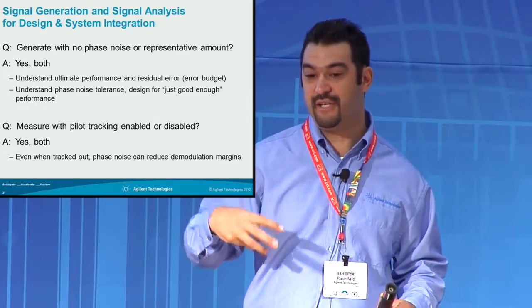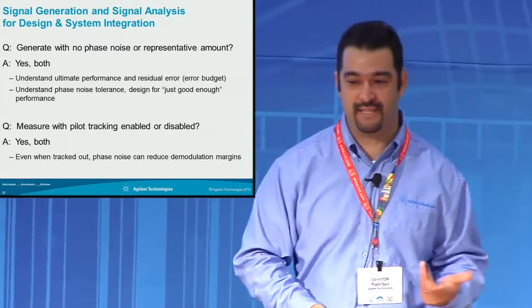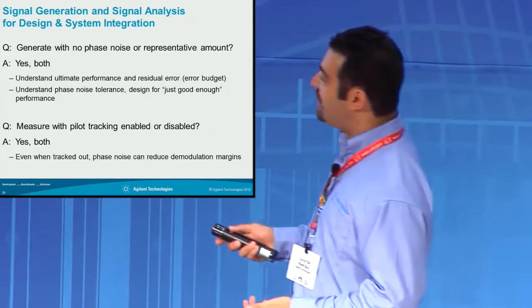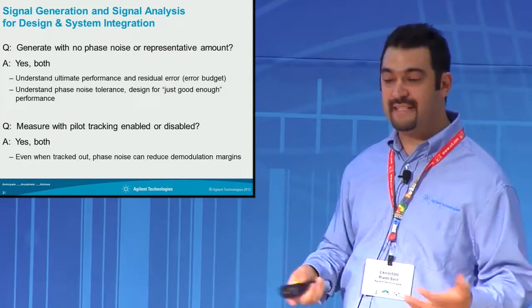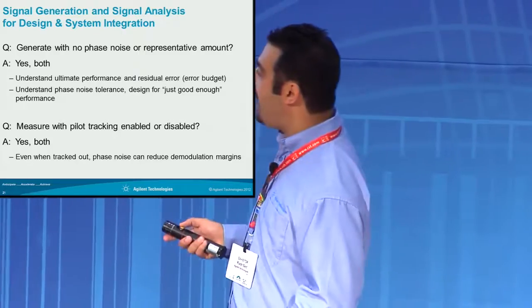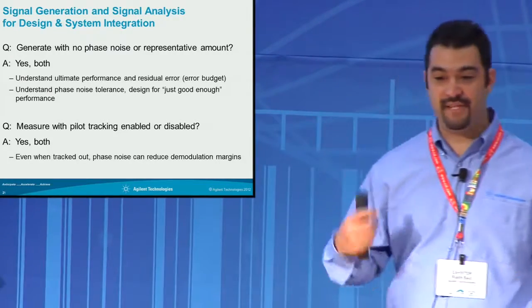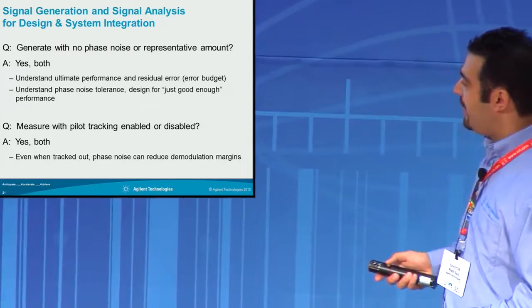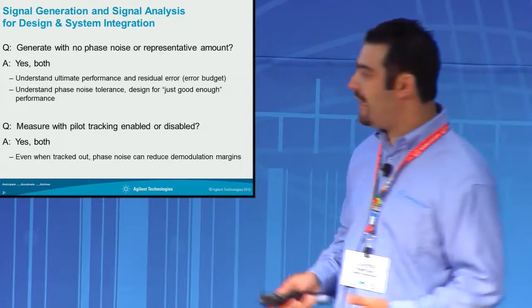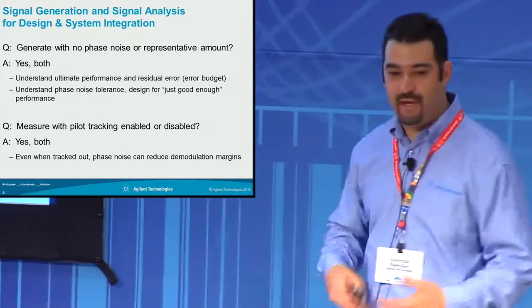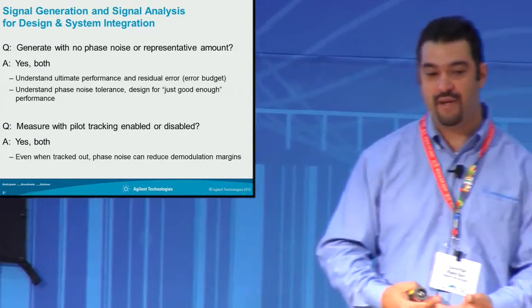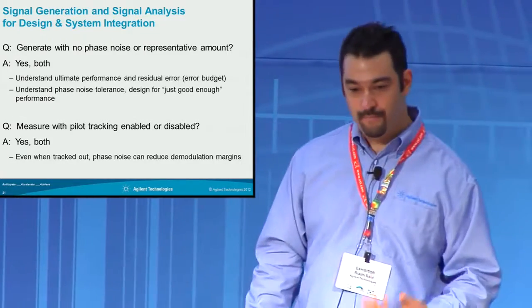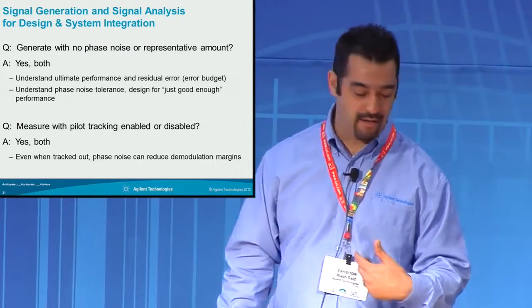If you characterize it early enough in R&D, you'll be able to answer that question more effectively. We would recommend: yes, try both. Understand your ultimate performance. Find out what your device can actually do and how tolerant it is to degraded phase noise in your VCOs and LOs. Should you turn on pilot tracking or not? You want to characterize your design and understand where it's going to degrade — characterize both with tracking on and off.